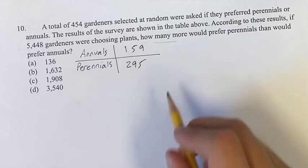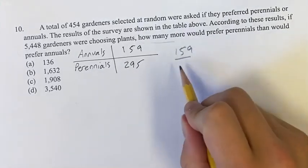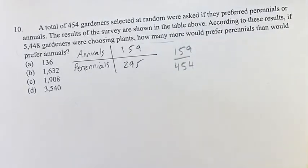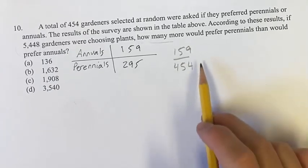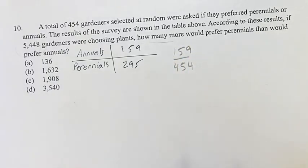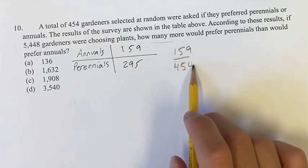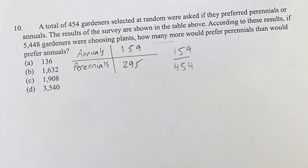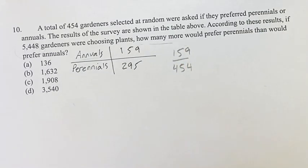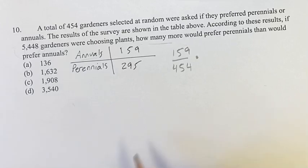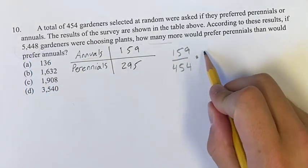So 159 over 454 is going to be the percentage, technically the proportion, of the gardeners who would prefer annuals over perennials because this is the number of annuals divided by the total number of gardeners. So this is going to be roughly 35%. You don't have to find the exact amount because what we're going to do, like we said, we're going to multiply this, 35% ish, by 5,448.